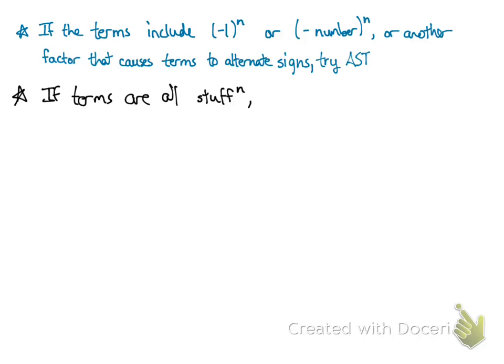If you've got a bunch of stuff to the nth, or n squared, or n plus first, or 3nth, or things like that, but it's not necessarily all just plain numbers to the nth, you could try the root test. The root test says you take the limit as n approaches infinity of the nth root of the absolute value of a_n, and that limit is bigger than or smaller than 1, gives you information about divergence or convergence. If the limit equals 1, the test failed, and you have to try something different.